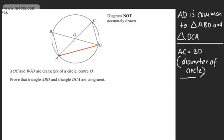Now the third thing I'm going to do is look at the angles. I'm going to focus on angle BAD and also angle CDA. What I'm going to state is that angle BAD will be equal to angle CDA.